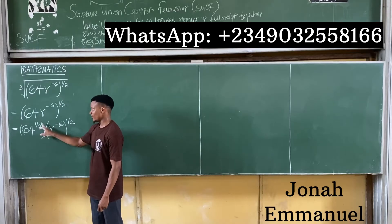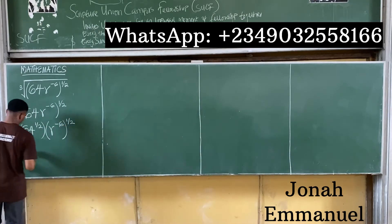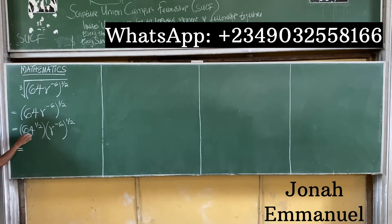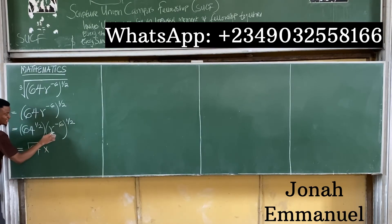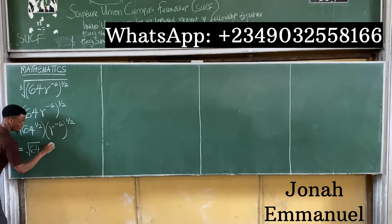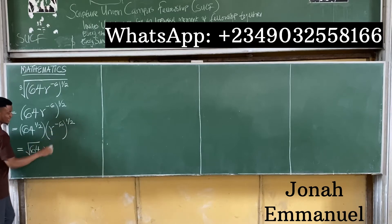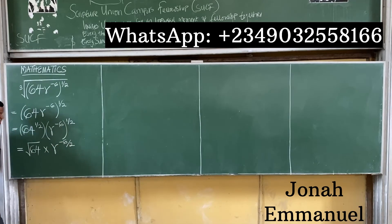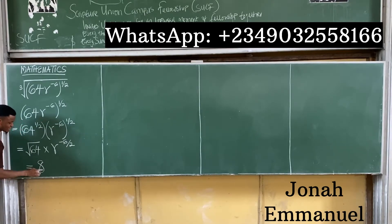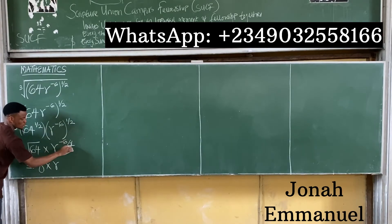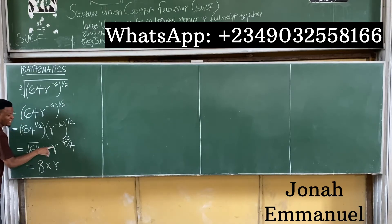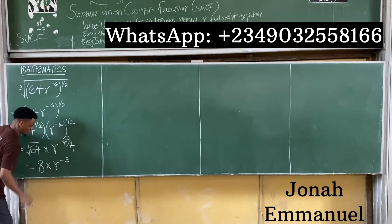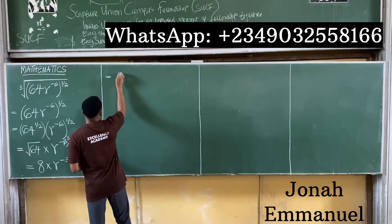64 to power one half means the square root of 64, which is 8. For the r term: negative 6 times one half gives negative 6 over 2, which is negative 3. So 64r to power negative 6, all to power one half, equals 8r to power negative 3.